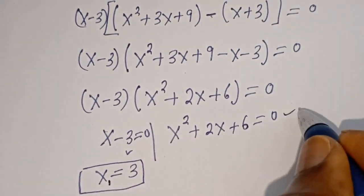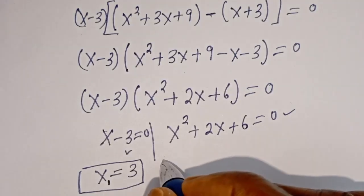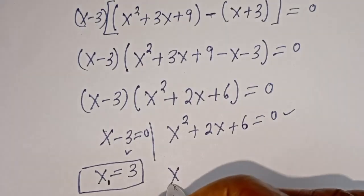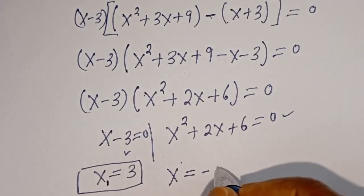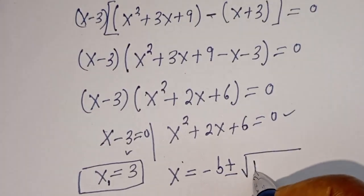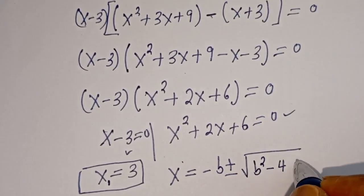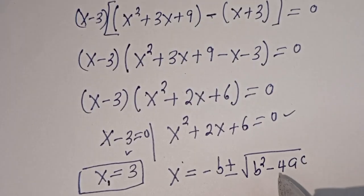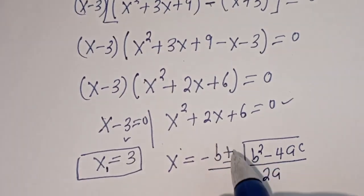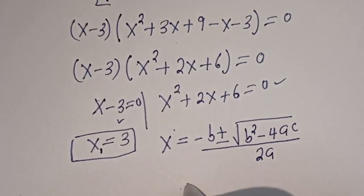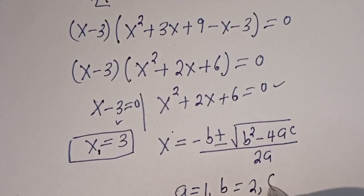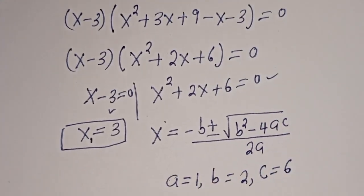From the remaining bracket, this is a quadratic equation which can be solved using the quadratic formula, given as S equals minus B plus or minus square root of B squared minus 4AC, divided by 2A. From this equation, A is equal to 1, B equal to 3, C is equal to 9.